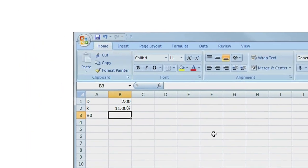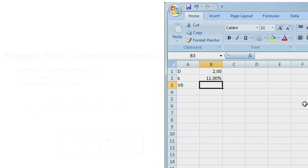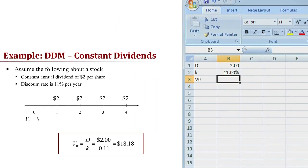And we're trying to calculate the present value. And again, this formula is very simple. It's just the dividend, which is in cell B1, divided by the discount rate, which is in cell B2. So this shows us the calculation using the constant cash flow perpetuity, $18.18.